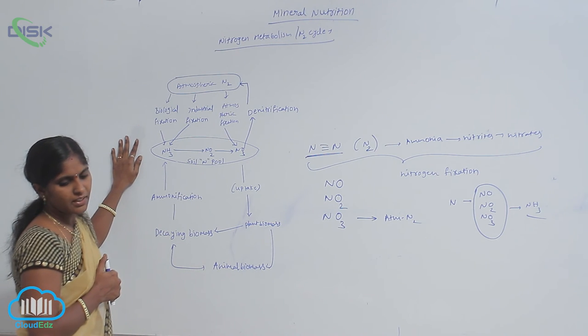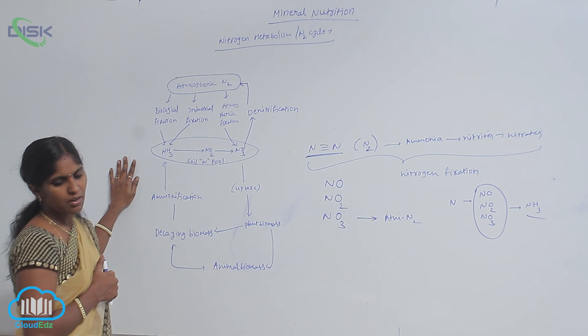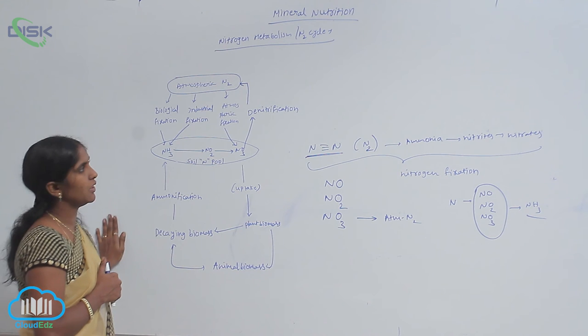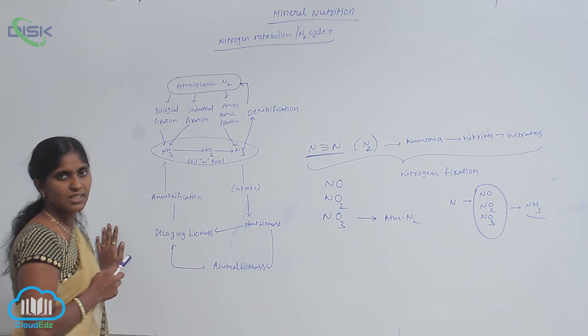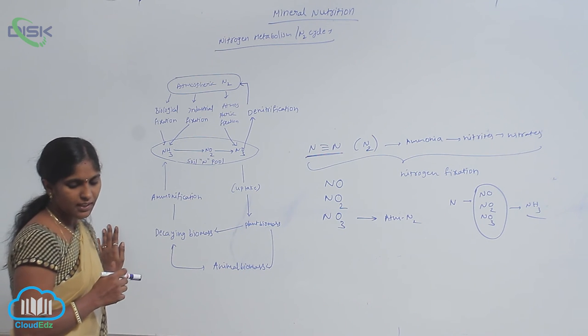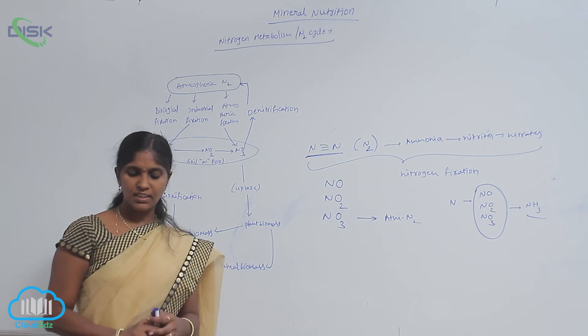The nitrates and ammonia in this form are absorbed by the plants and converted into amino acids, proteins, enzymes, nucleic acids, pigments, hormones, etc.